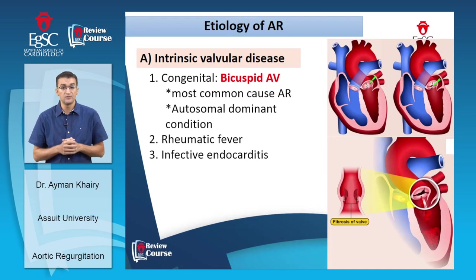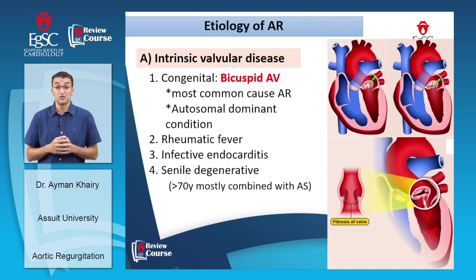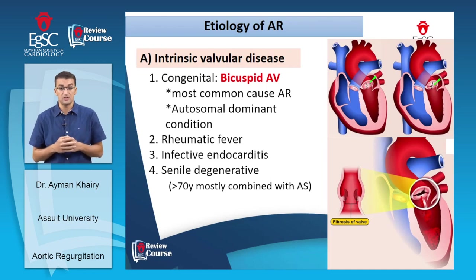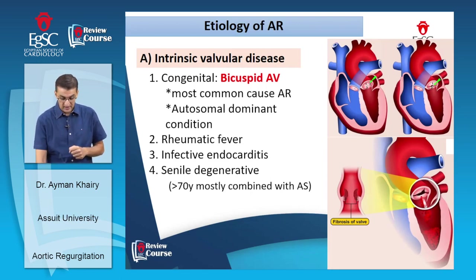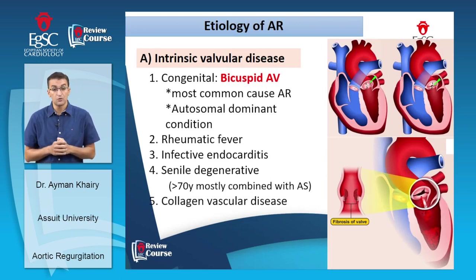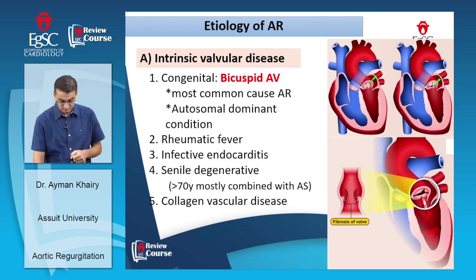Third cause of intrinsic valvular disease is infective endocarditis. Fourth is degenerative senile disease in patients over 70 years, mostly combined aortic regurgitation and aortic stenosis. Fifth is collagen vascular disease.